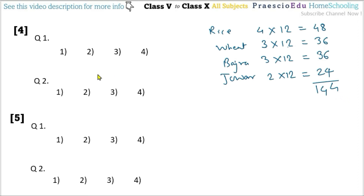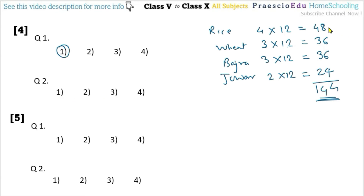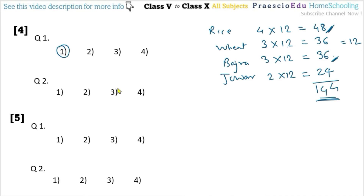Question 1: how many sacks of food grains in all are there? Total is 144 — option number 1. Question 2: how many more sacks of rice are there than Bajra? Rice = 48, Bajra = 36, so 48−36 = 12 more sacks — option number 3.